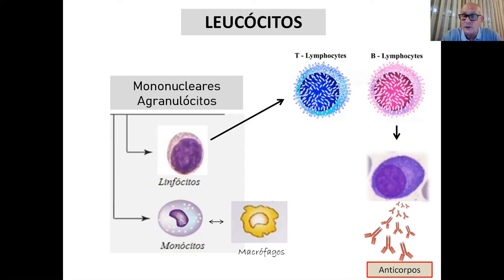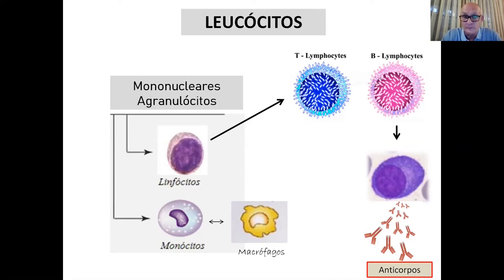Isso só a célula B faz. Os linfócitos T têm outras funções. Também importantes são as células dendríticas e os monócitos — que, quando vão para o tecido, se chamam macrófagos. Elas são importantíssimas porque apresentam o antígeno para o linfócito T, como veremos a seguir.